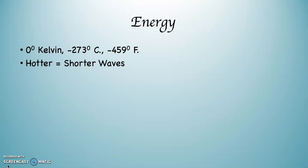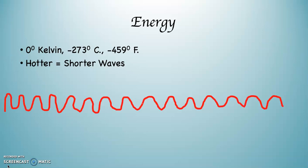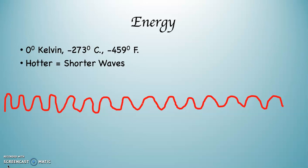The hotter something is, the shorter the wavelengths are that it produces. So the wavelengths are pushed close together. And the cooler something is, the longer the wavelengths are that it produces. I'm just trying to give you an example - this is not really what it looks like. So the hotter something is, the shorter the wavelengths, and the cooler something is, the longer the wavelengths it produces.